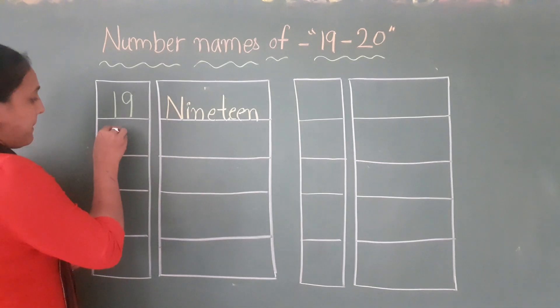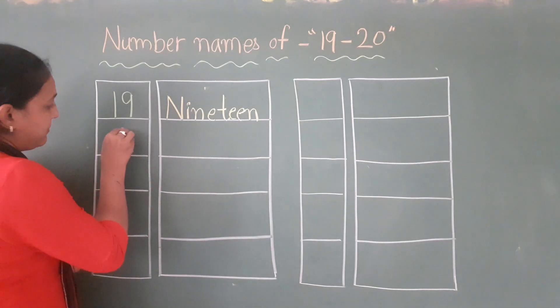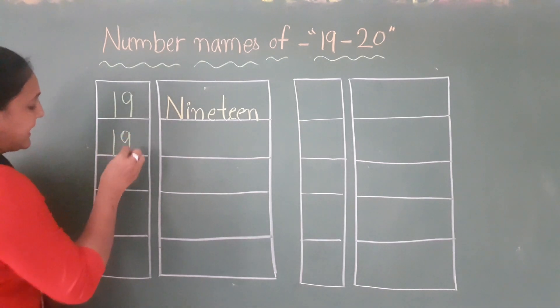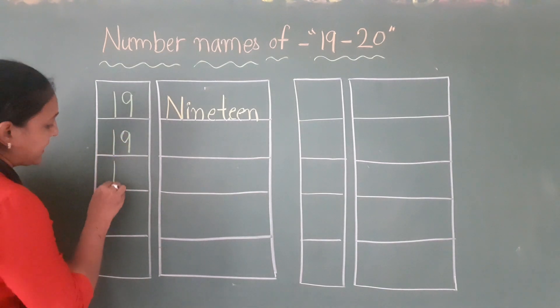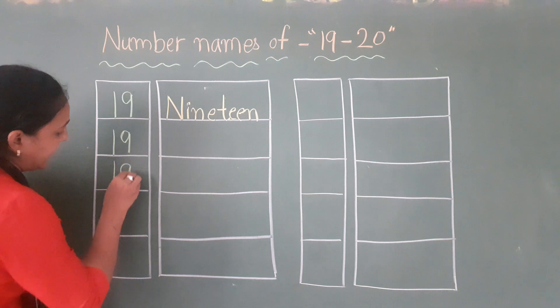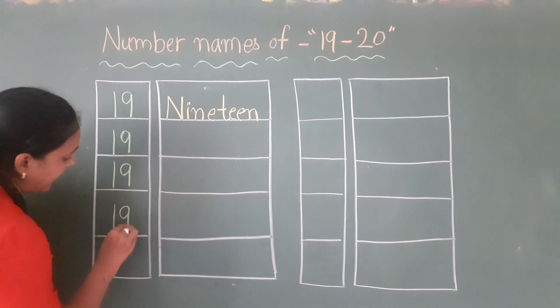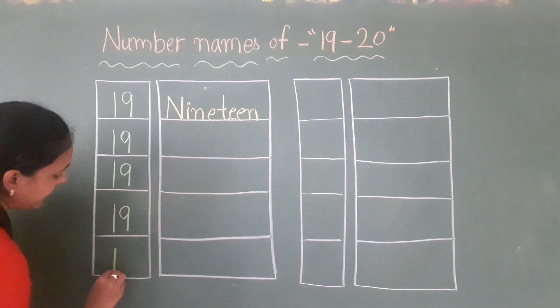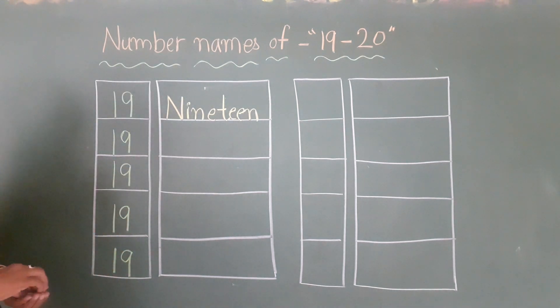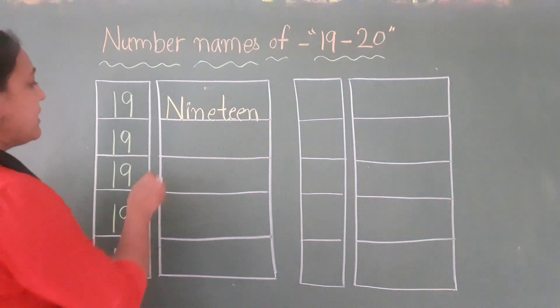Pehle hum 19 likhenge, finish kar denge. 1, 9 — 19. 1, 9 — 19. Aur 1, 9 — 19.